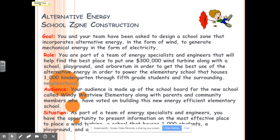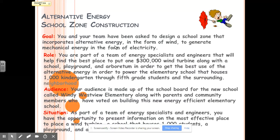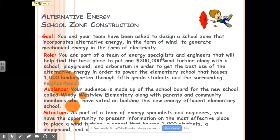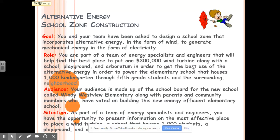Remember, when you are constructing your school zone, your goal is that you and your team have been asked to design a school zone that incorporates alternative energy in the form of wind to generate mechanical energy in the form of electricity. Your role is as part of a team of energy specialists and engineers that will help find the best place to put one $300,000 wind turbine.